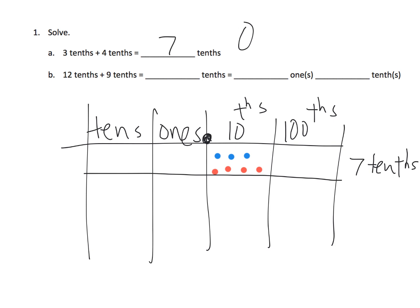Also written as 0.7, alright? That is your extra bonus, because Eureka Math is not requiring us to write that yet.